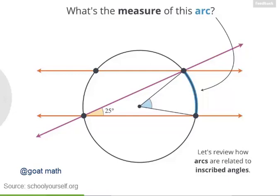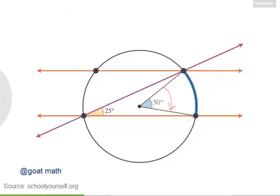For a given arc, the central angle is always double the inscribed angle. So if this inscribed angle measures 25 degrees, then the central angle measures 50 degrees. In other words, this arc measures 50 degrees.